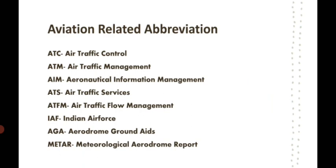ATM is Air Traffic Management — the management of air traffic that integrates air traffic control, air traffic flow management, and other functions. AIM is Aeronautical Information Management — covering all information regarding various airports, routes, etc. ATS is Air Traffic Services, which can include air traffic control service, meteorological service, communication service, and others. ATFM is Air Traffic Flow Management — calculating and managing the flow of traffic, such as when to release an aircraft.